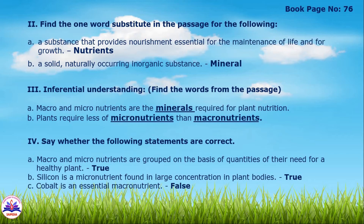Next, Roman numeral 2: find one word substitutes in the passage. Task on page 76. First: a substance that provides nourishment essential for the maintenance of life and for growth – the answer is 'Nutrients'. Second: a solid, naturally occurring inorganic substance – the answer is 'Minerals'.